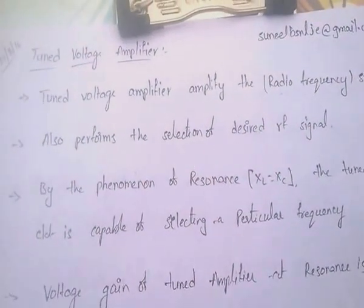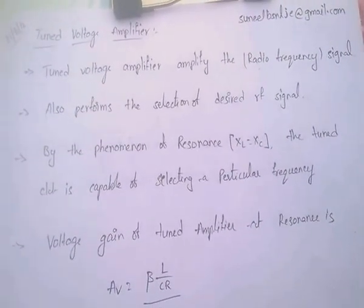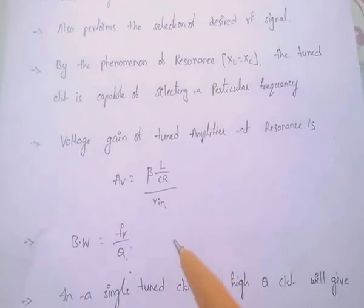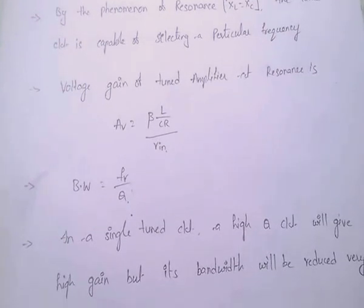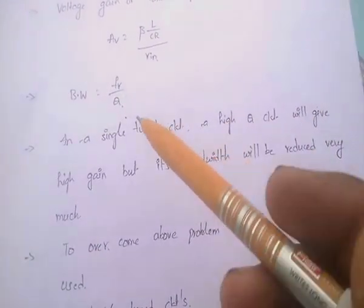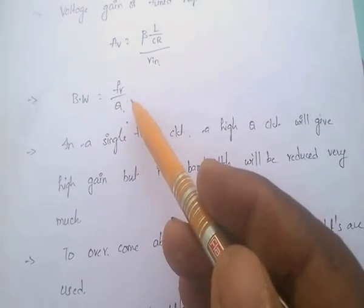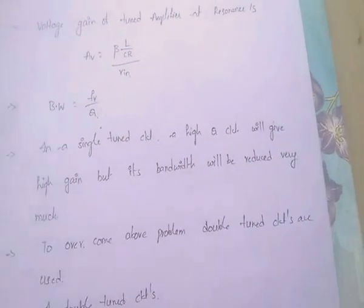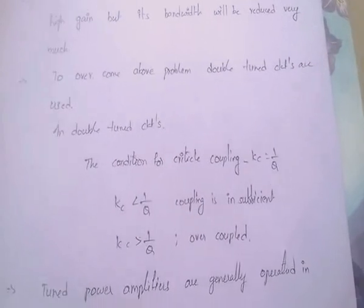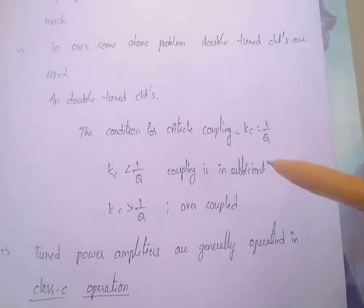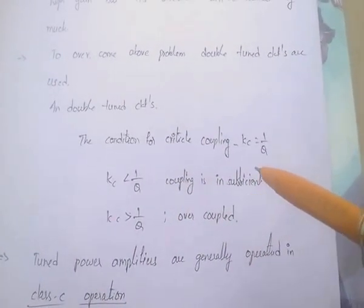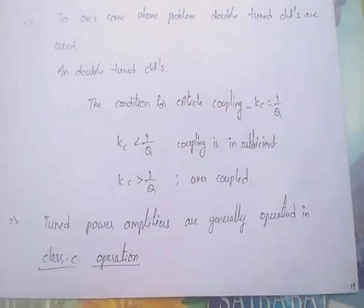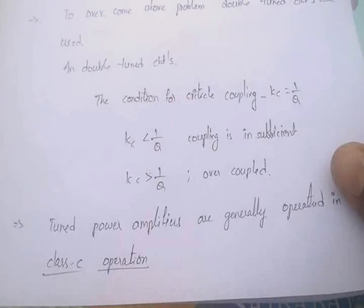To recap: the tuned voltage amplifier amplifies the radio frequency signal and performs the selection of desired radio frequency signals. By the phenomenon of resonance, it is capable of selecting a particular frequency. Voltage gain Av equals beta into L by CR by Rin, and bandwidth equals FR by Q. High Q gives high gain but low bandwidth, so double tuned circuits are developed. In double tuned circuits, critical coupling condition is Kc equals 1 by Q; less than 1 by Q is insufficient, greater than 1 by Q is over coupled. Tuned power amplifiers operate in class C.